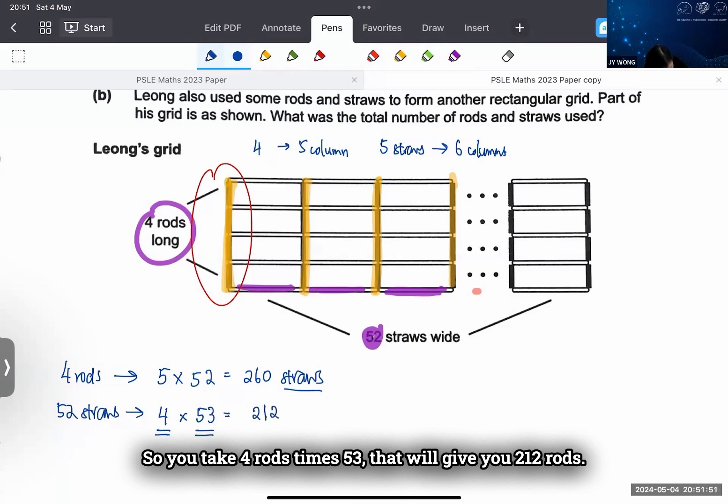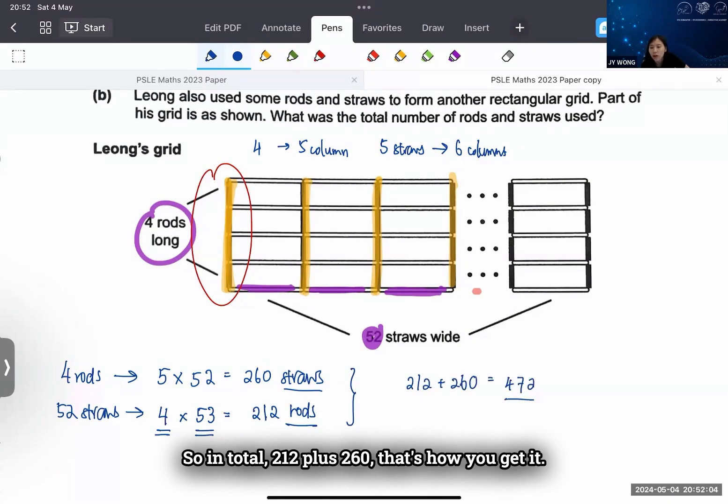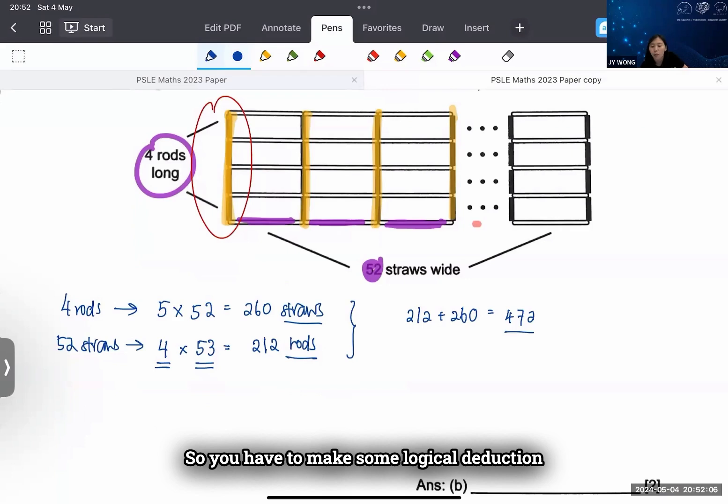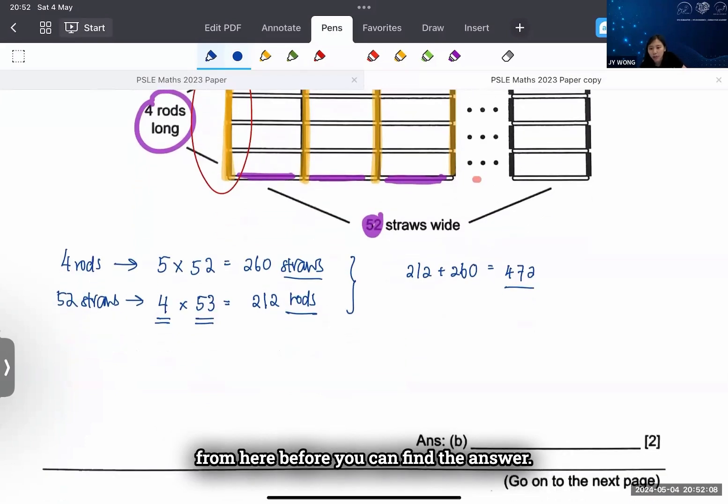So in total, 212 plus 260, that's how you get it. So you have to make some logical deduction from here.